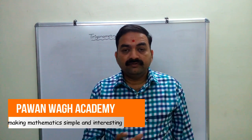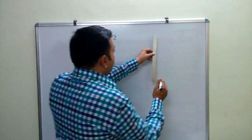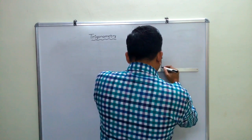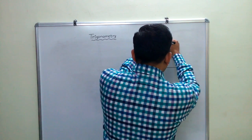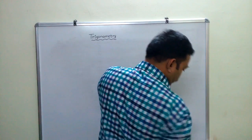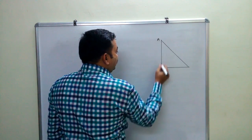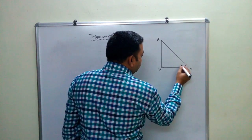Before starting this chapter, we will review the different values of the trigonometric ratios that we have learnt. First, we will draw a right angle triangle. Here, this is triangle ABC with the right angle at B, and here there is the acute angle theta.